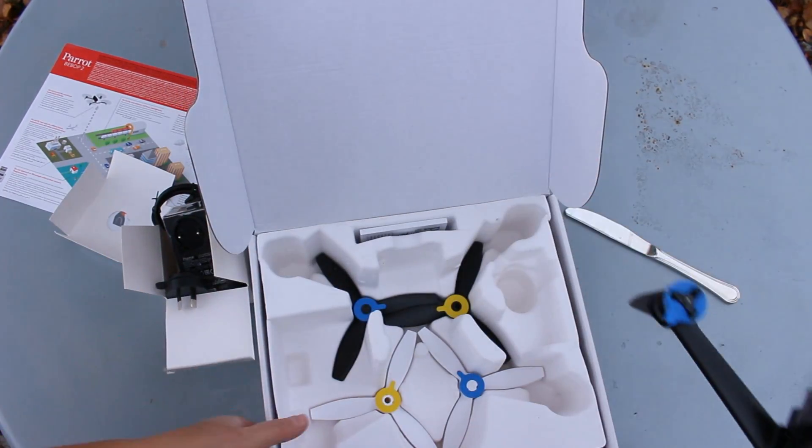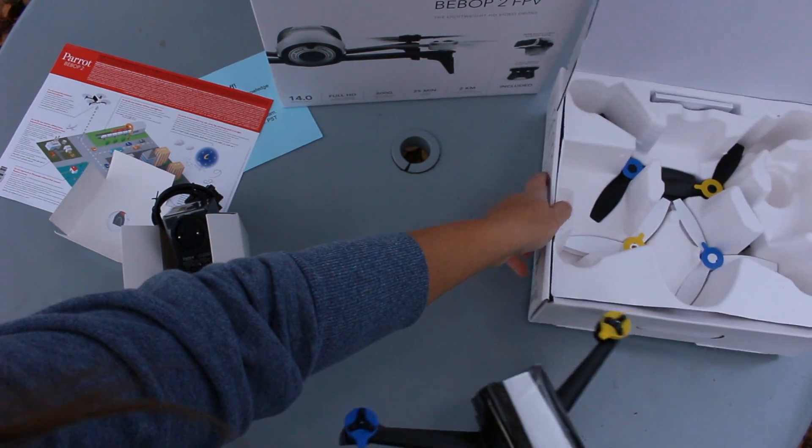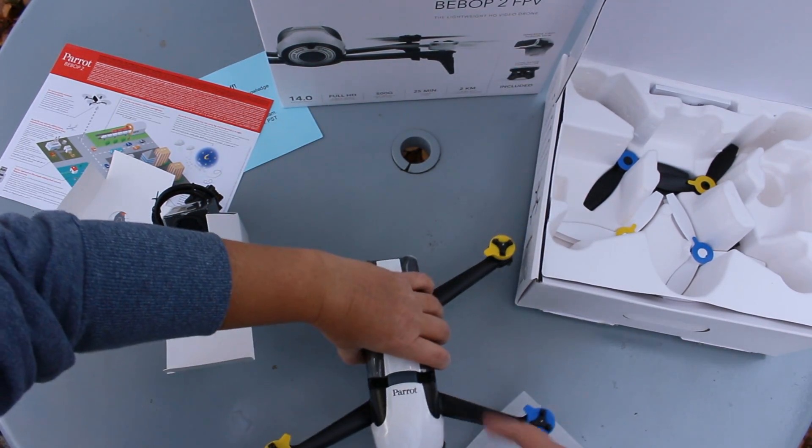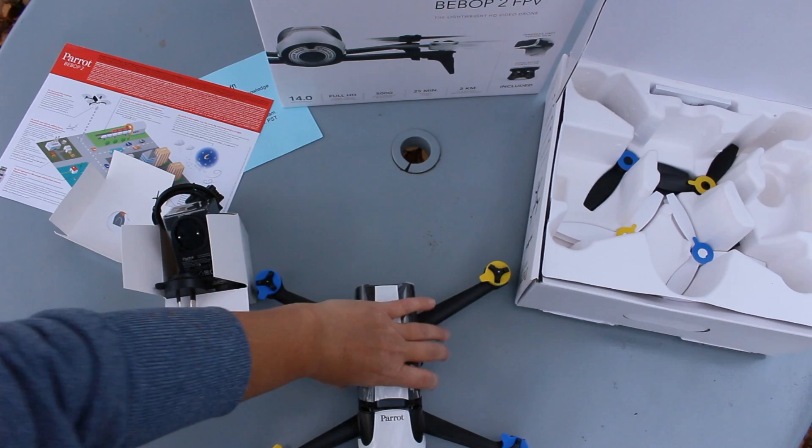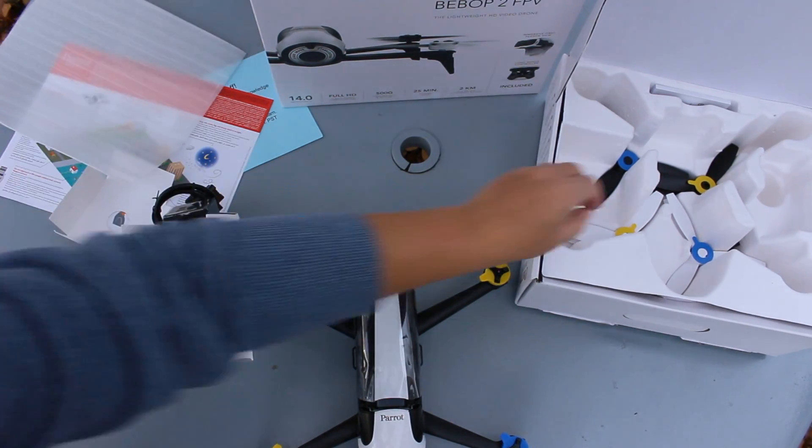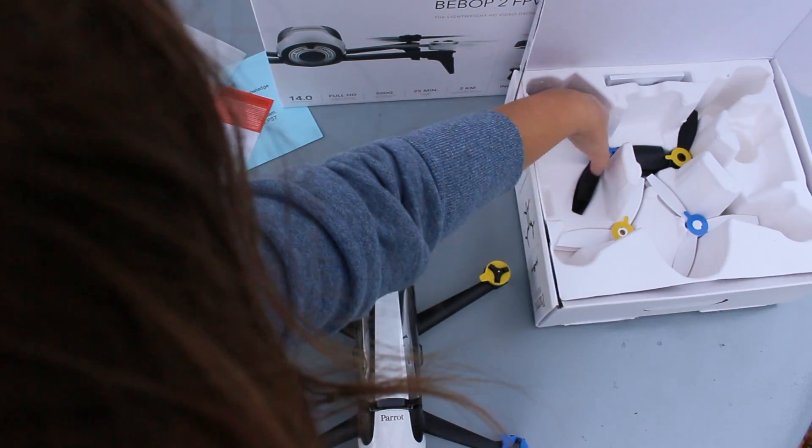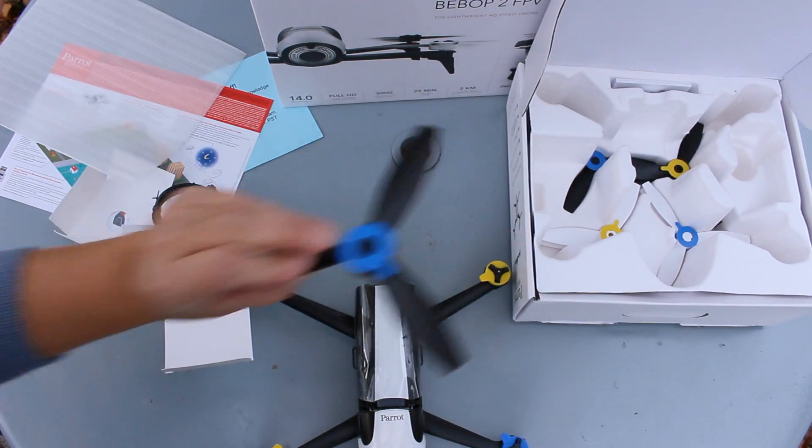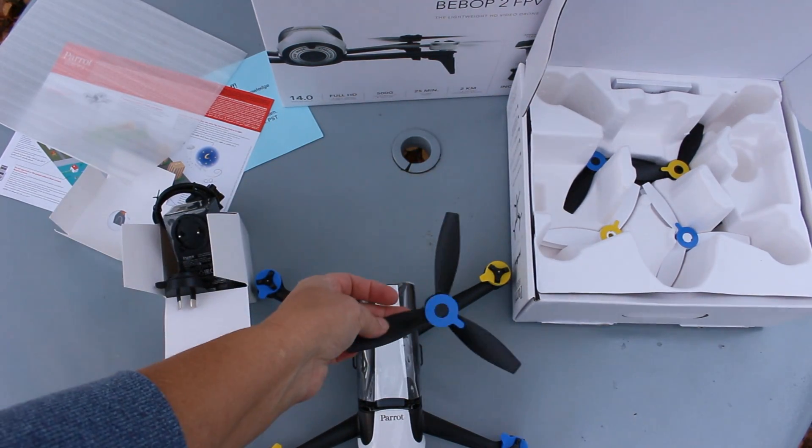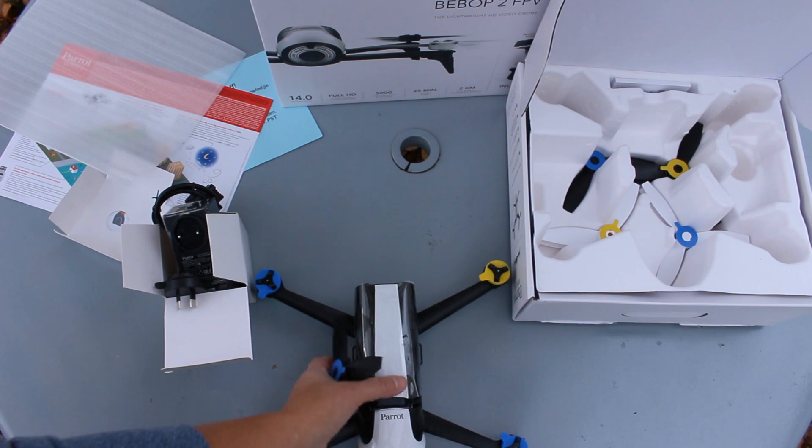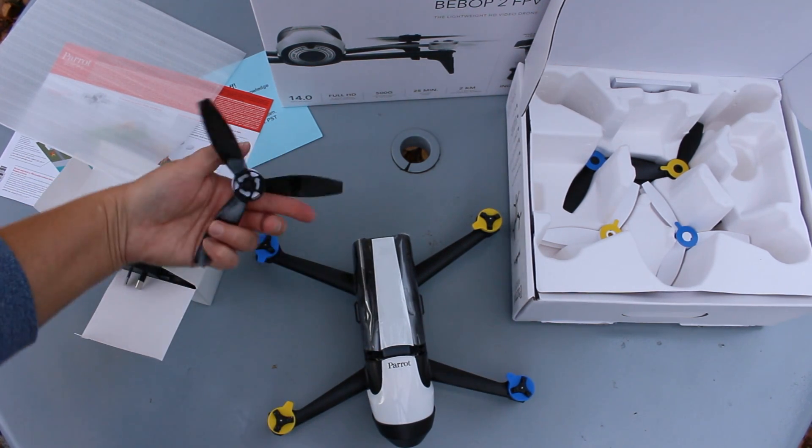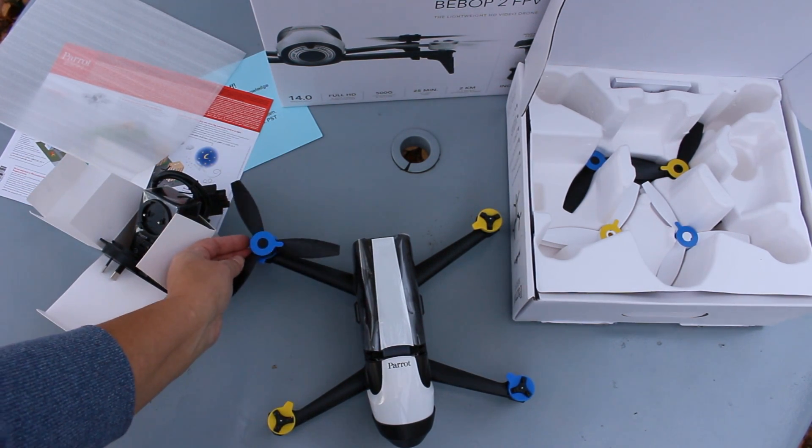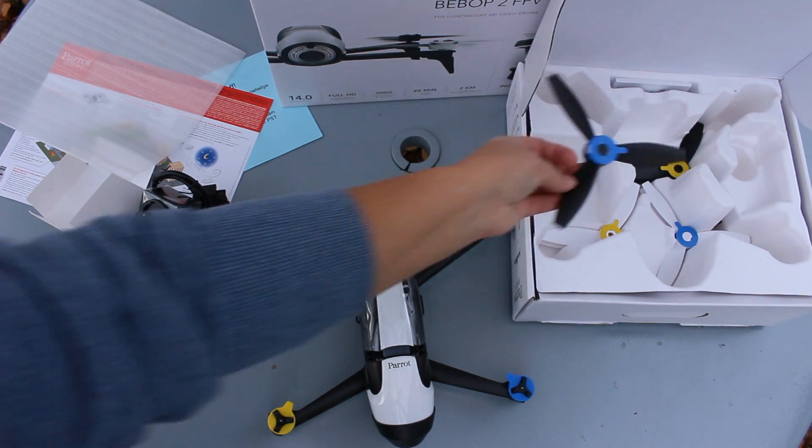This is the drone. And the rotors seem to come color coded. I will probably have to figure that out later. Looks simple enough though.